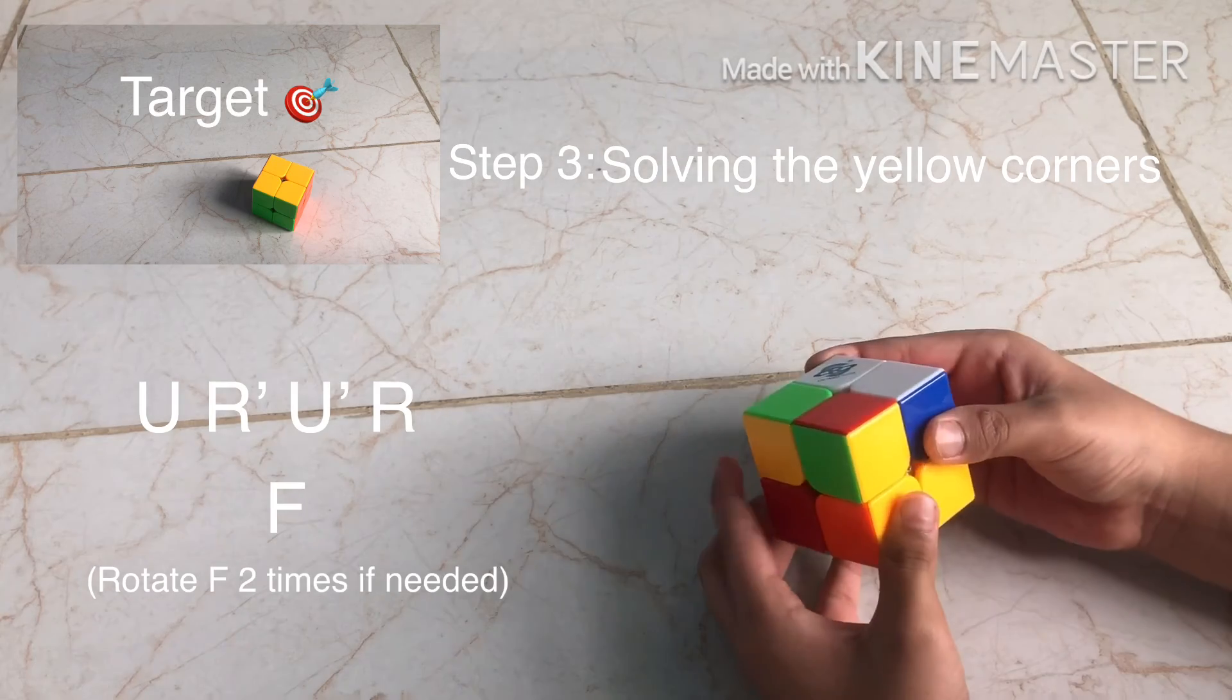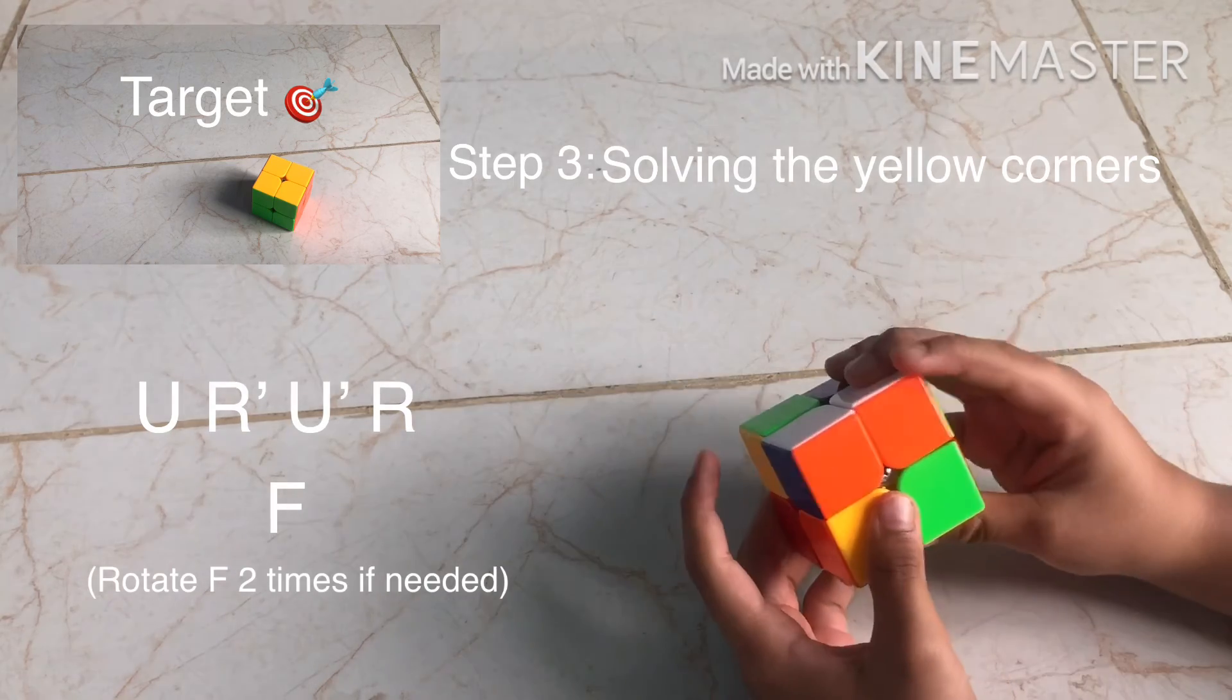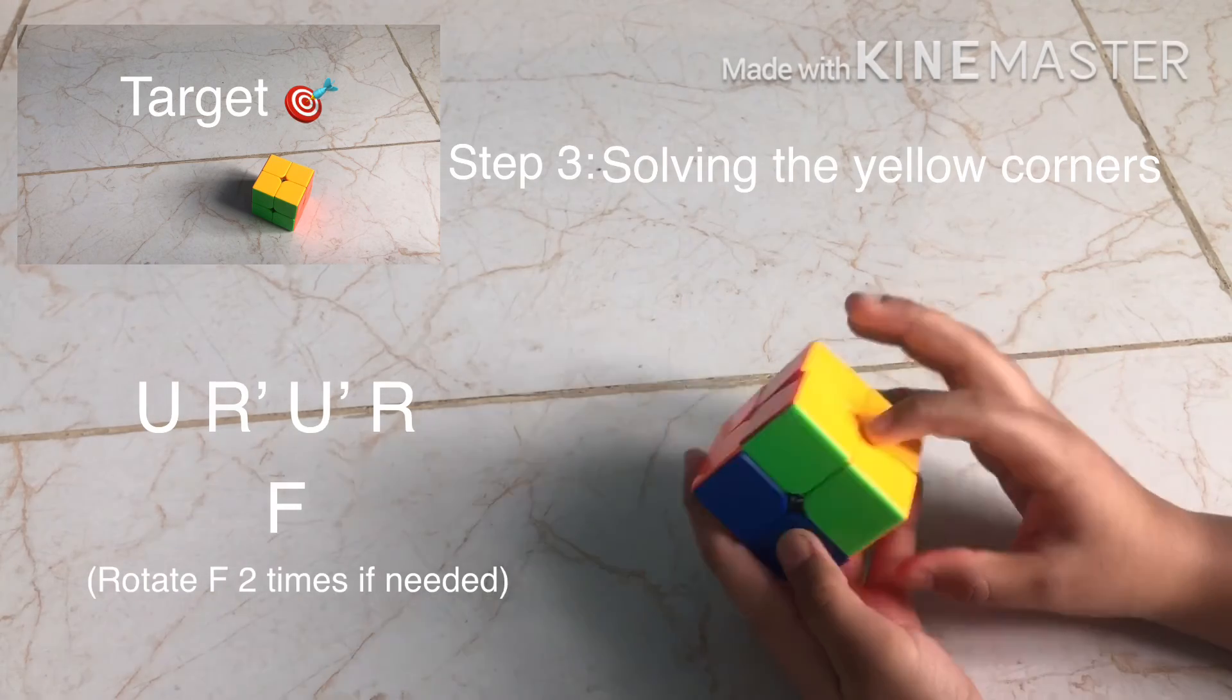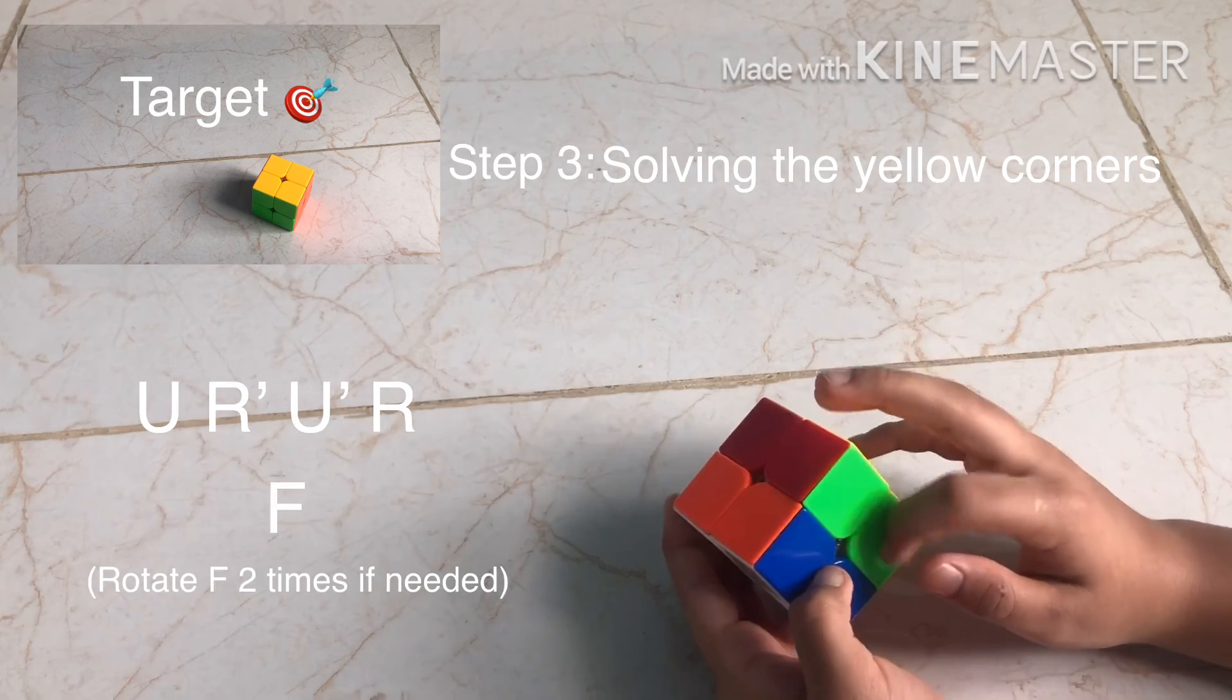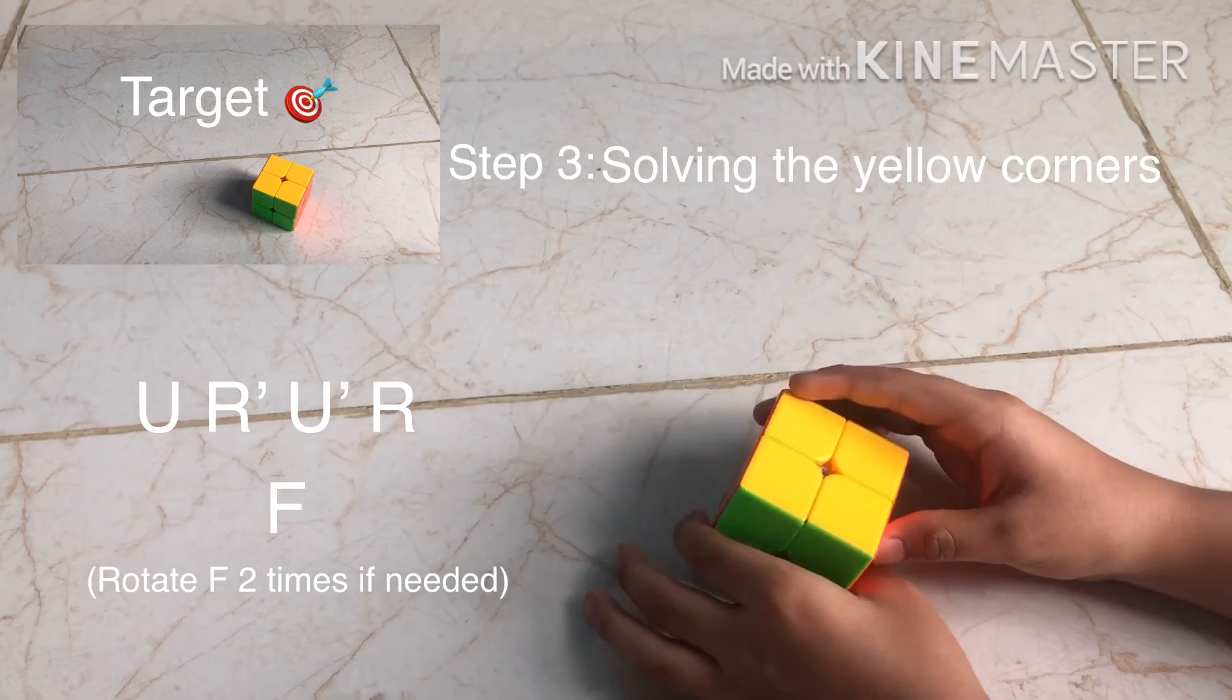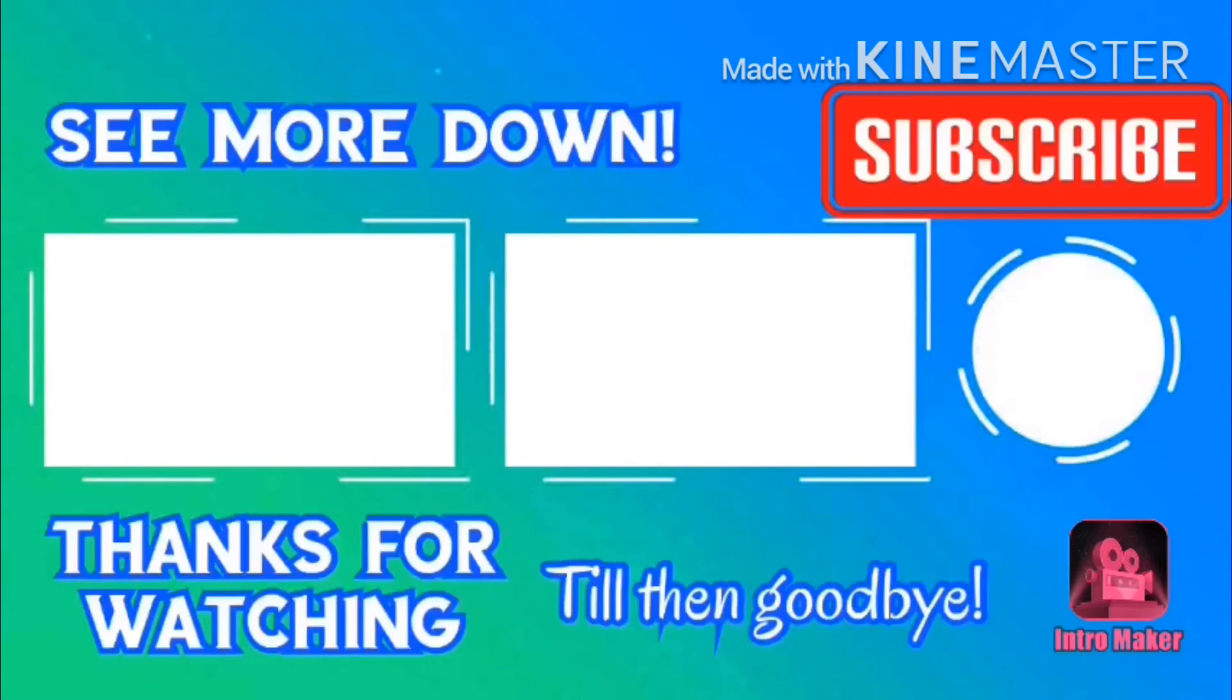And then, again, the same algorithm. U, R apostrophe, U apostrophe, R. U, R apostrophe, U apostrophe, R. And then, when you get the yellow side solved, you should have this kind of state. And then, rotate it this layer so that the cube is solved. And you should always see it, if you're right.